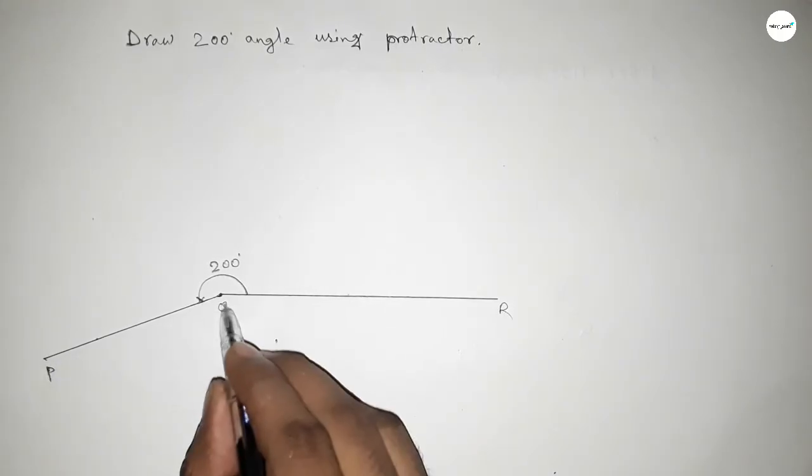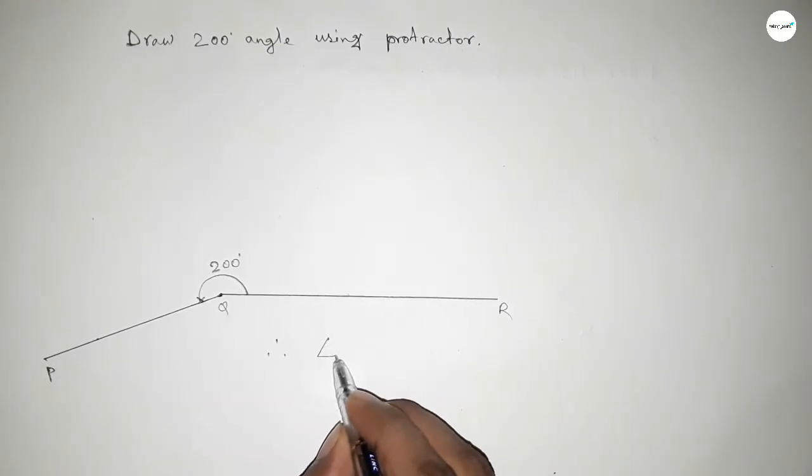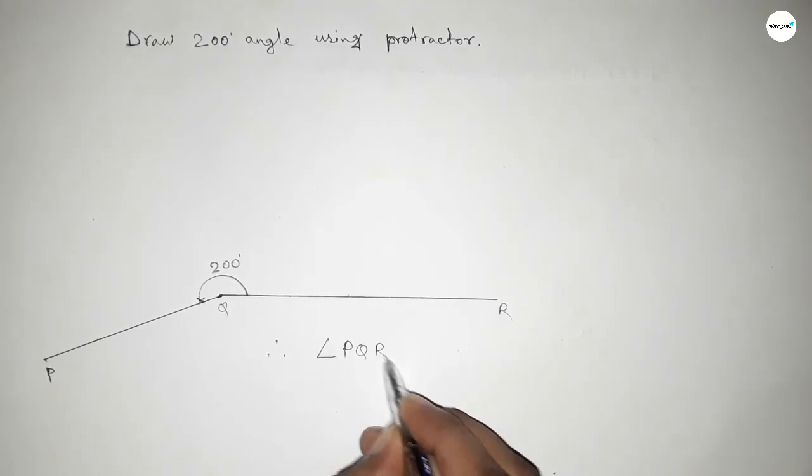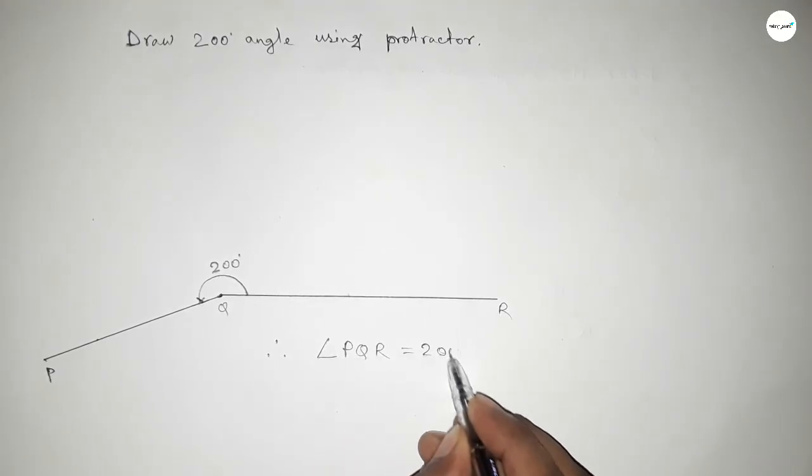Angle PQR equal to 200 degrees. That's all, thanks for watching. If this video is helpful to you, then please share it with your friends. Thanks for watching.